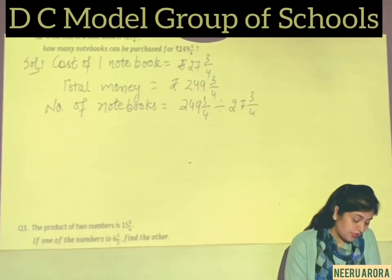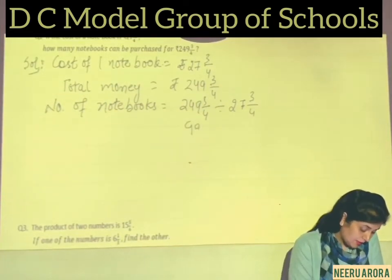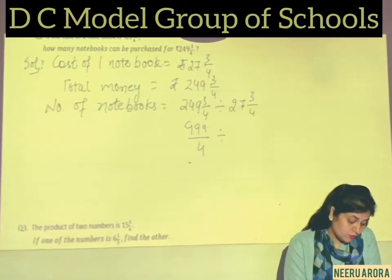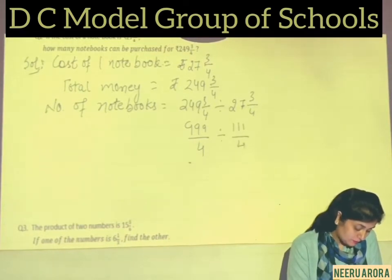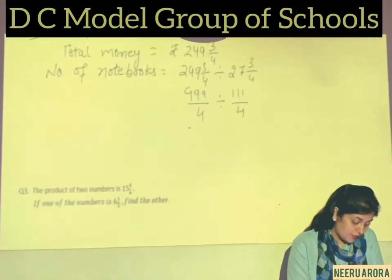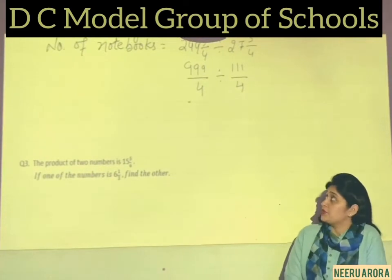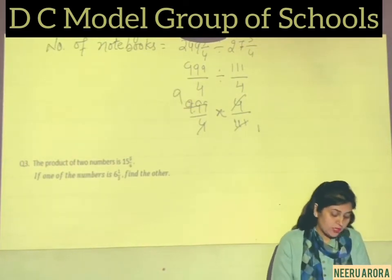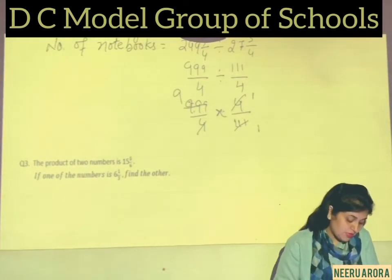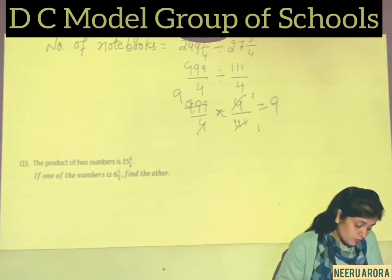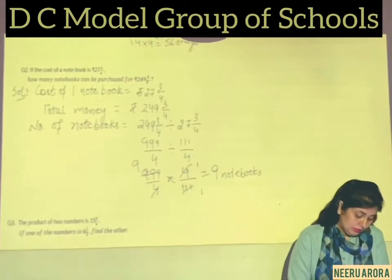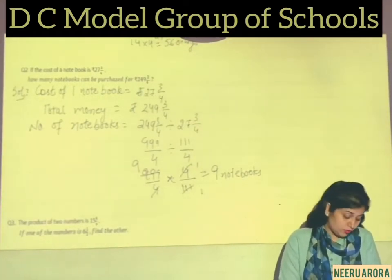Multiplying 249 × 4 = 996, plus 3 = 999, so it is 999/4. For the second fraction: 27 × 4 = 108, plus 3 = 111, so it is 111/4. Now we multiply the first fraction by the reciprocal of the second: 999/4 × 4/111. The 4s cancel, and 999 ÷ 111 = 9. So 9 notebooks can be purchased for Rs. 249 3/4.